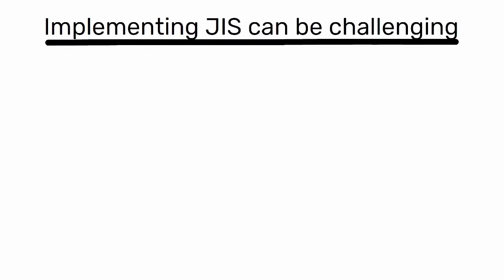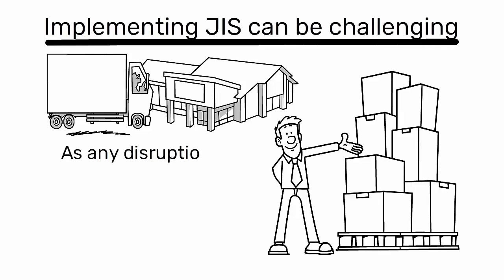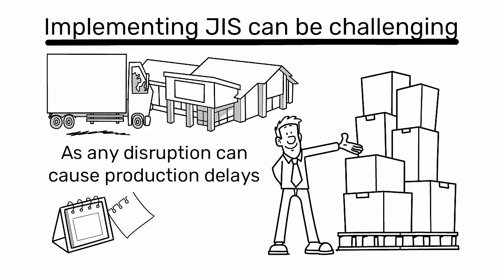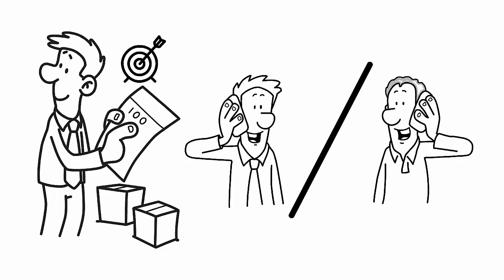However, implementing J-I-S can be challenging. It requires a stable and reliable supply chain, as any disruption can cause production delays. It also requires accurate forecasting and real-time communication between the manufacturer and its suppliers.